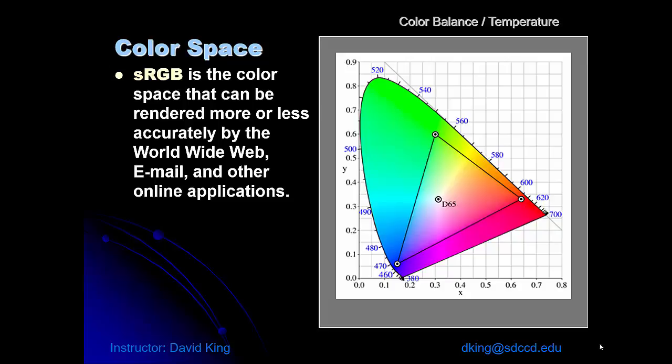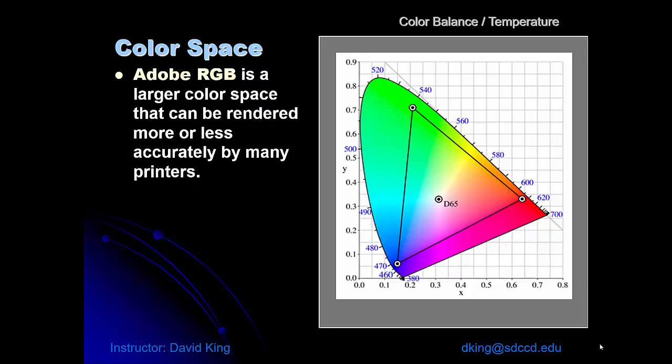Well, that wasn't good enough for Adobe, so Adobe created a color space called, cleverly, Adobe RGB. It's a larger color space that can be rendered more or less accurately by a lot of printers.